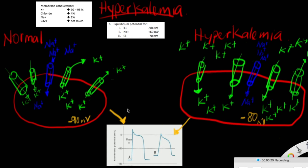So what is hyperkalemia? It is an increase in potassium level in the blood, which means that there is an increase in extracellular potassium. The equilibrium potential for potassium is around negative 90 millivolts. The resting membrane potential is maintained by the ion that has the highest conductance through its membrane during resting, and the highest conductance for the cell is potassium, then followed by chloride, sodium, and calcium.